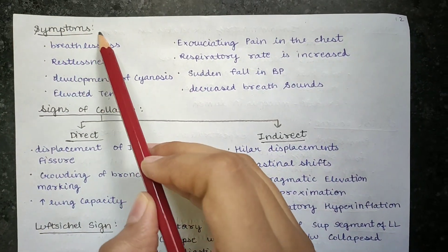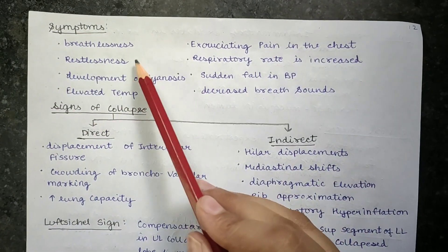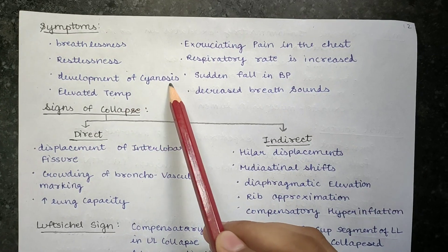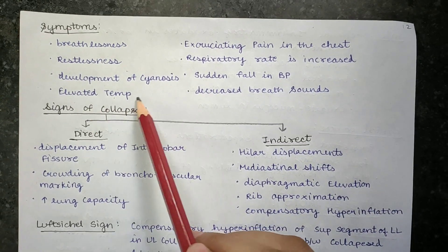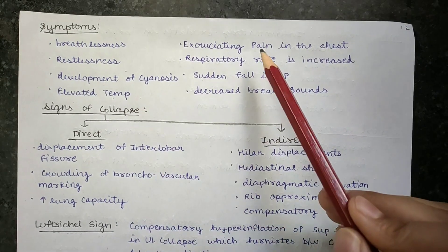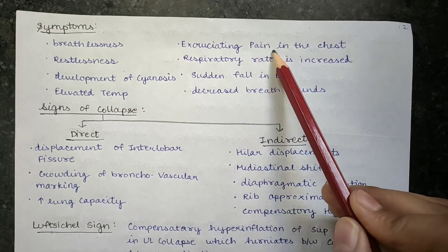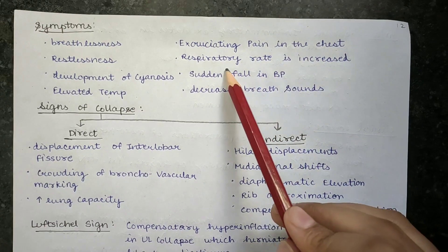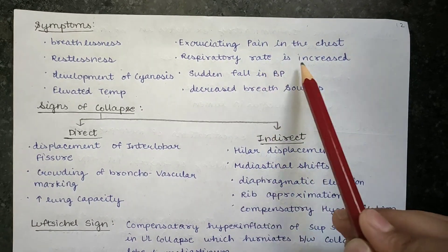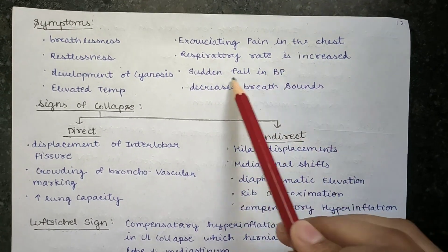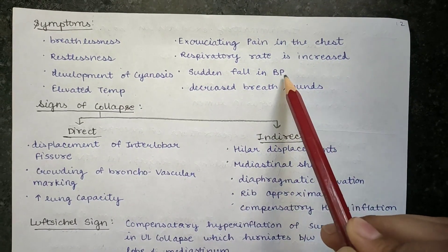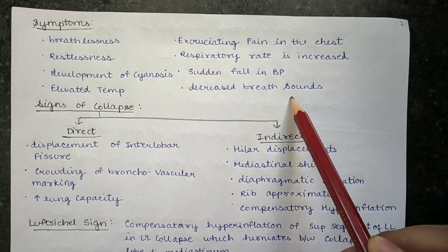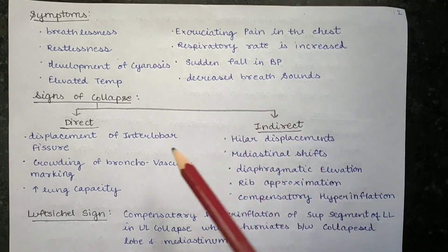Symptoms can include breathlessness, restlessness, development of sinuses, elevated temperature, excruciating pain in the chest, increased respiratory rate, sudden fall in BP that can lead to shock, and decreased breath sounds.